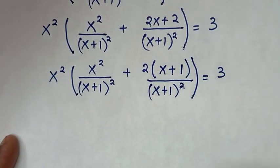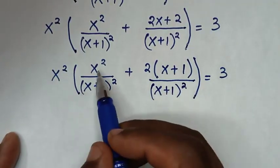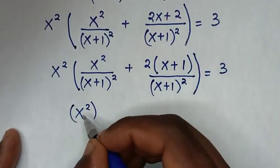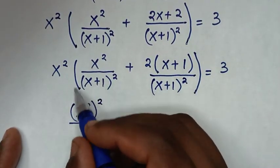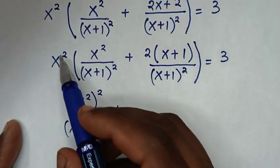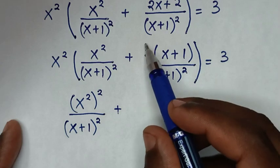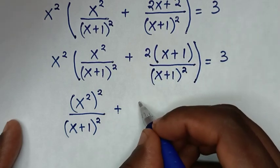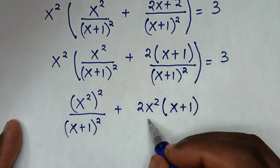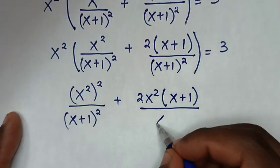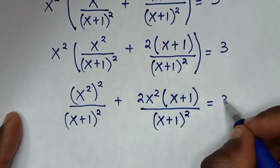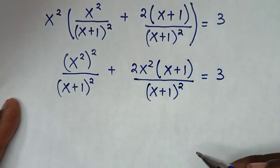Then in the next step, we will multiply by x² inside the bracket. So x² times x² will be (x²)² over the denominator (x+1)², then plus x² times 2(x+1), which will be 2x²(x+1) over (x+1)², equals 3.